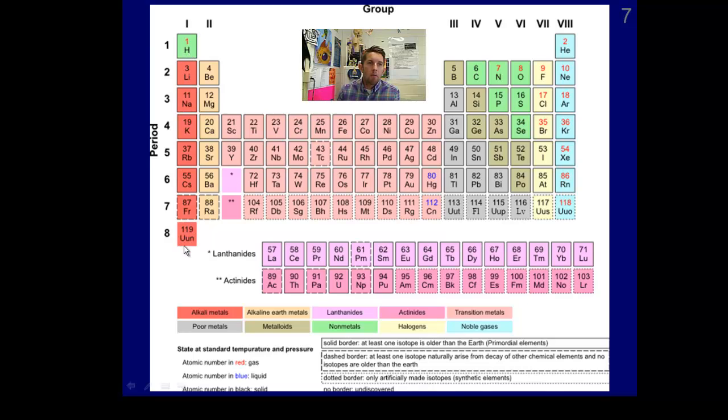Group one, we're talking about the alkaline metals. That's excluding hydrogen. We'll talk about why hydrogen is there. But these are the alkaline metals. They all behave the same because of the number of valence electrons. These are the alkaline earth metals here in group two. You should note that on your periodic table. These in the middle are the transition metals. Over here, we have the poor metals along the stair step. The metalloids. Non-metals here, including hydrogen. The halogens in group seven. And finally in group eight, the noble gases, the inert gases.